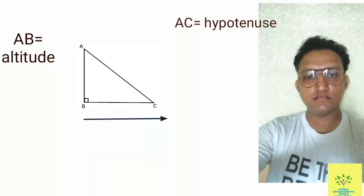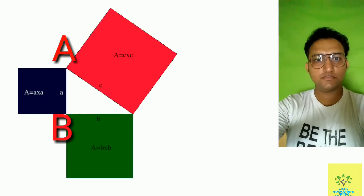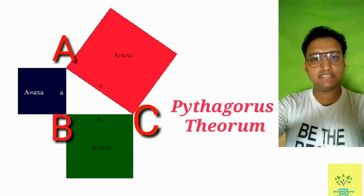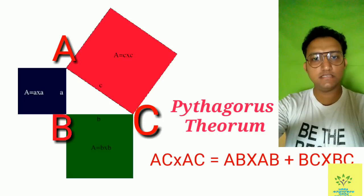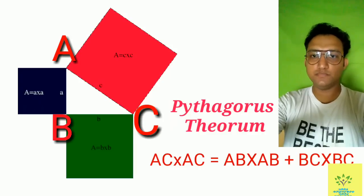hypotenuse. Pythagoras theorem says that the square of the hypotenuse is equal to the square of the base plus the square of the altitude. It means AC² = AB² + BC².